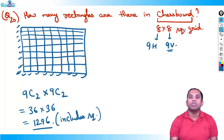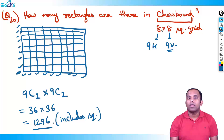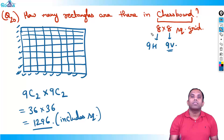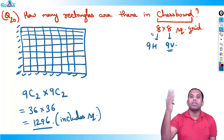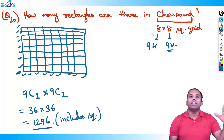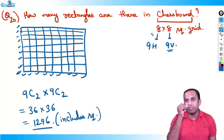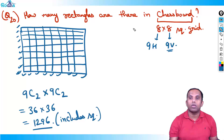To find number of rectangles in a grid — it's very easy. For an 8×8 grid: 9C2 × 9C2. For a 3×5 grid: 4C2 × 6C2. For a 20×30 grid: 21C2 × 31C2. Just add one to each dimension, then use combinations.